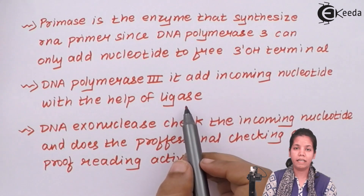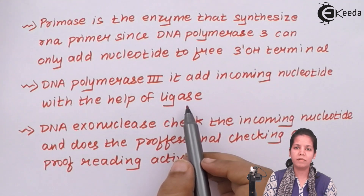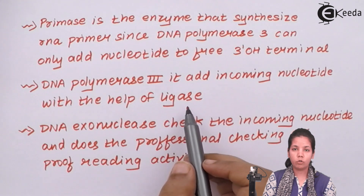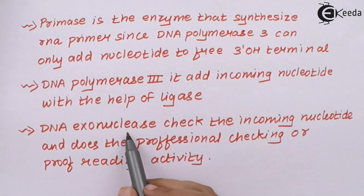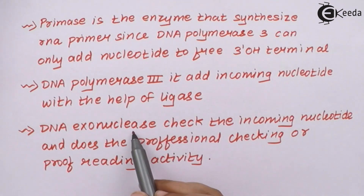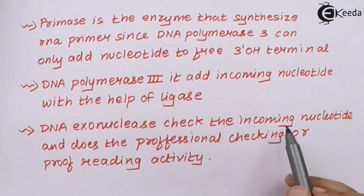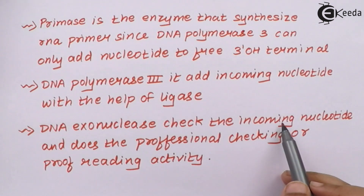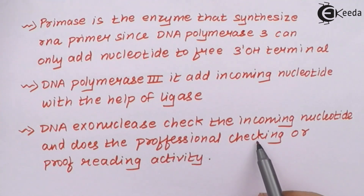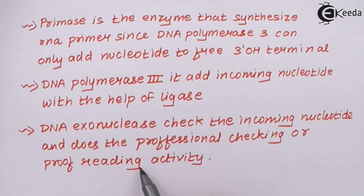Once the double-stranded DNA is formed, there could be mistakes in the DNA. As humans, we cannot afford even a single mistake in a nucleotide, as it could lead to a genetic disease or disorder. To avoid that, there is DNA exonucleases — exo meaning to remove a segment of DNA that is not required. DNA exonucleases check the incoming nucleotides: A should always pair with T forming a double bond, and G should always pair with C forming a triple bond. This is the proofreading activity — cross-checking to ensure all nitrogen bases are complementary.